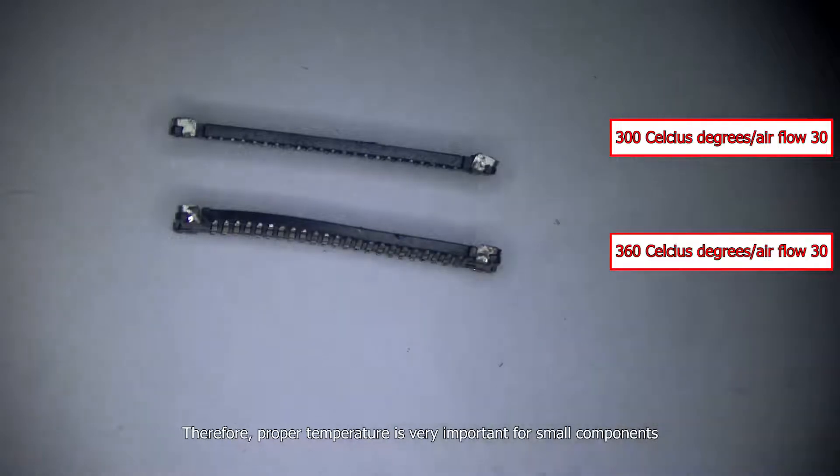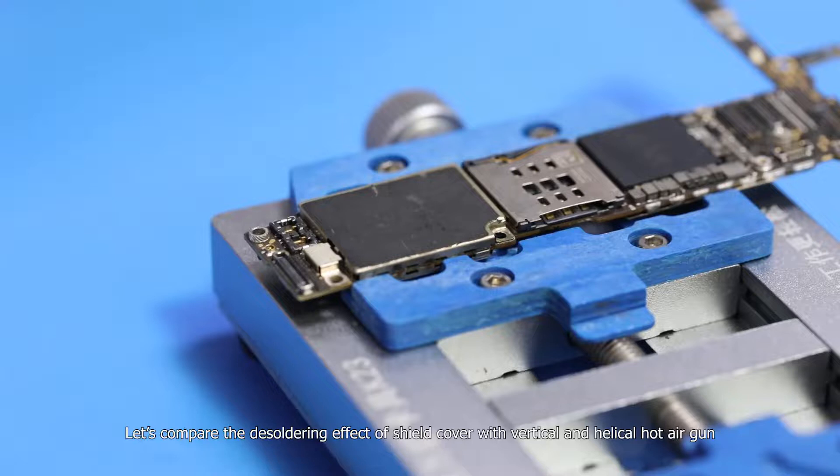Therefore, proper temperature is very important for small components. Let's compare the desoldering effect of shield cover with vertical and helical hot air gun.